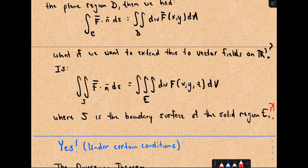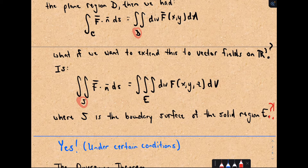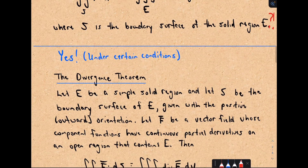Suppose we want to extend this. Now we're calculating a triple integral over some volume, some three-dimensional object. It says we can turn that into the same formula, but now we're just integrating over the surface of that three-dimensional object. The boundary of a plane is a curve, and now the boundary of a three-dimensional object is going to be a surface. And it turns out, under certain conditions, this relationship does in fact hold.